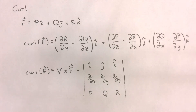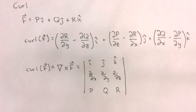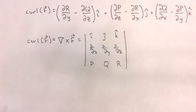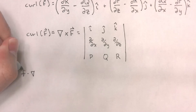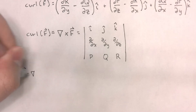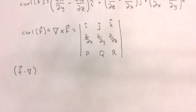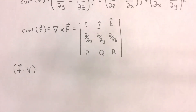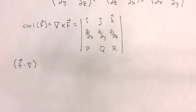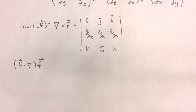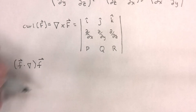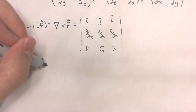Now, if we were to apply our operator f dot del to its own vector field — in other words, if we take this operator f dot del and apply it to f itself — we will have the following vector identity.